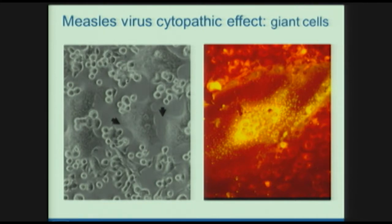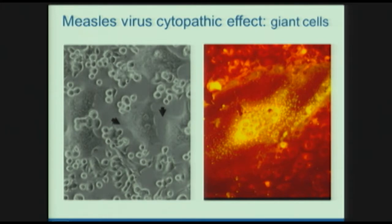Because those proteins allow for fusion of the virus with the infected cell, infected cells are also expressing those proteins on the surface. The effect of measles virus replication in cells is to allow them to fuse to each other, forming giant cells, most easily seen on the right where you can see lots of nuclei within a giant cell. The yellow staining is the measles virus protein. This pathology is seen in the lungs and also the lymphatic tissue of people with measles.